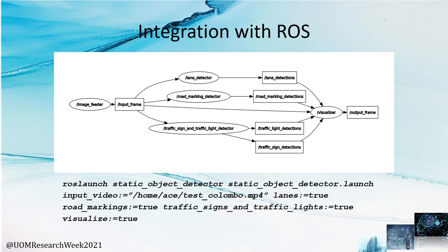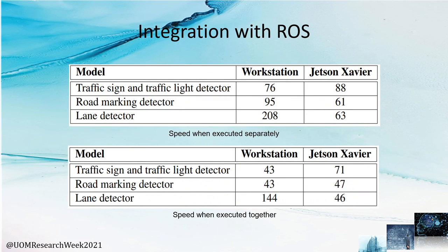The final part was to integrate everything together with ROS. This diagram shows the architecture of the ROS package static object detector. The image feeder node reads a video file and publishes frames to the input image topic at 30 frames per second. The three detection models run in parallel and publish lane detections, road marking detections, traffic sign detections, and traffic light detections to the relevant topics. The visualizer node marks all these detections and publishes the resultant image to the output image topic. The RViz visualization tool can be used to visualize the detections in real-time, and the system can be launched using a single ROS launch file. The overall system performance table shows that all models are capable of performing in real-time on both the workstation and the embedded system.